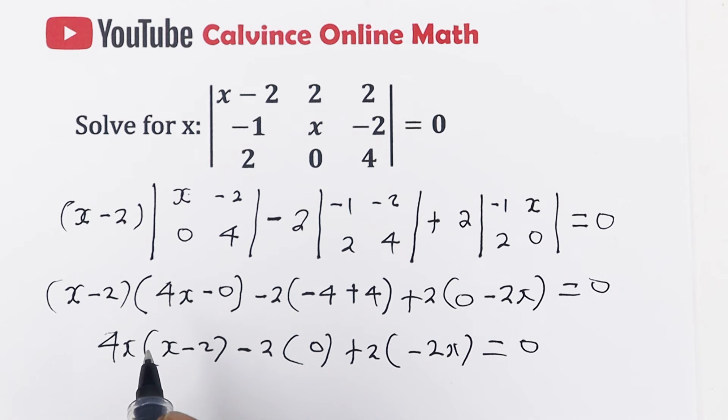For the first case, we have 4x squared minus 8x, and then 2 times 0 is just 0. So we are left with 2 times negative 2x, that is minus 4x, and that's equal to 0.